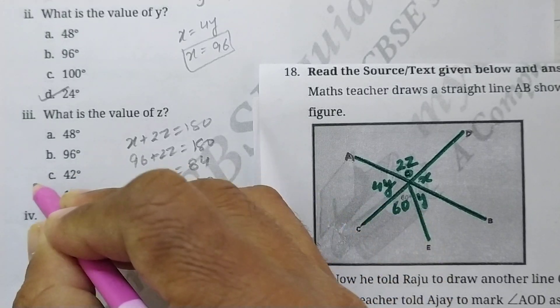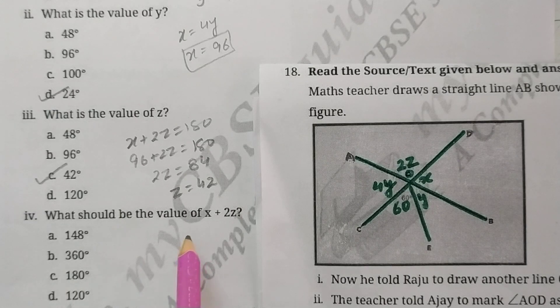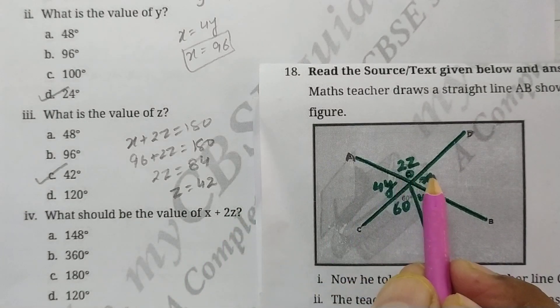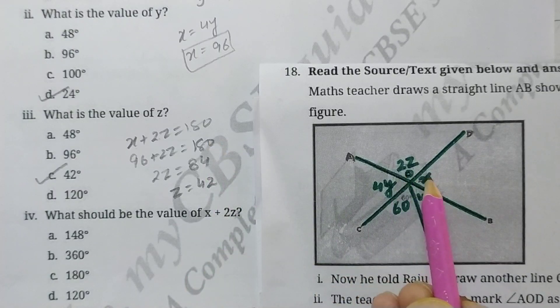The next question is: What should be the value of x plus 2z? So x plus 2z, we have found out here only, 180 degrees, because these are forming linear pair. So this question is also done.